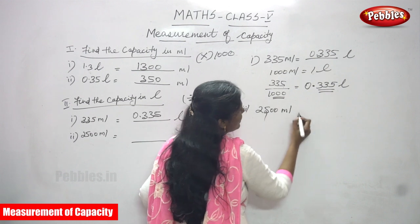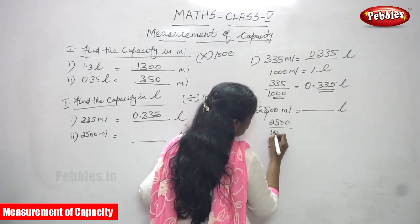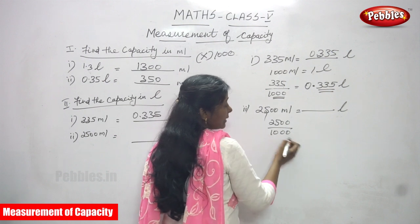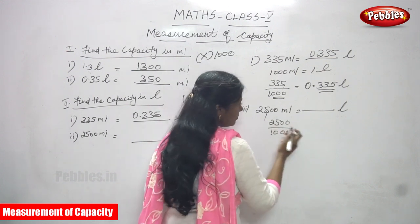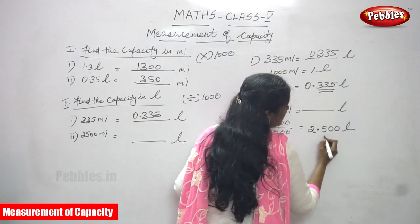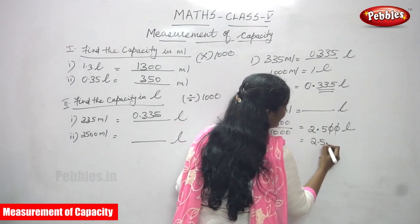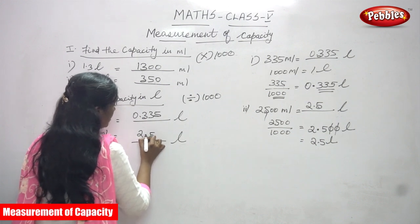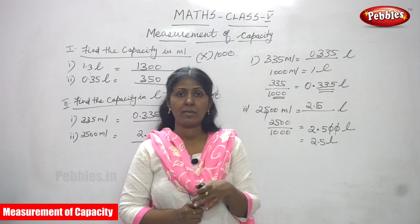The next question: 2500 milliliters is equal to how many liters? 2500 divided by 1000 because milliliter converts to liter — smaller to bigger means divide by 1000. In 1000 there are three zeros, so move three decimal places to the left: one, two, three. You get 2.5 — cancel the trailing zeros after the decimal. The answer is 2.5 liters. Thank you.